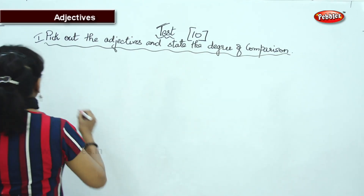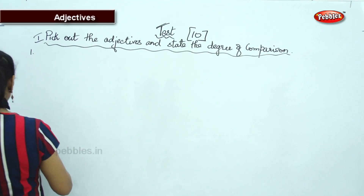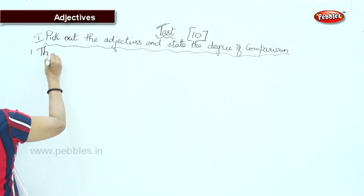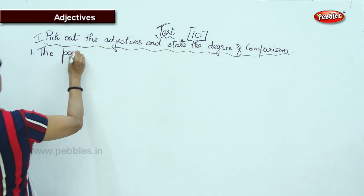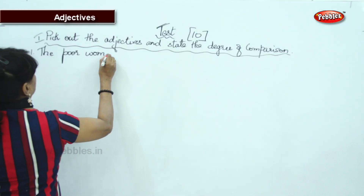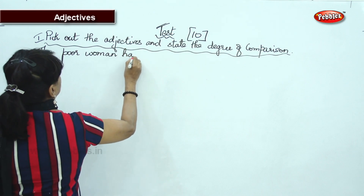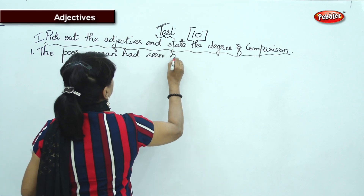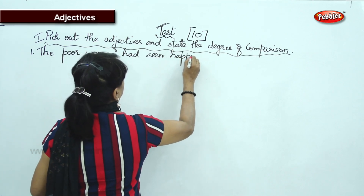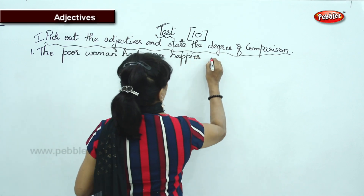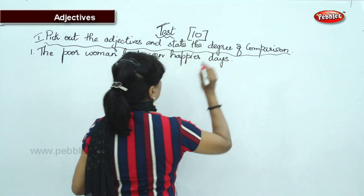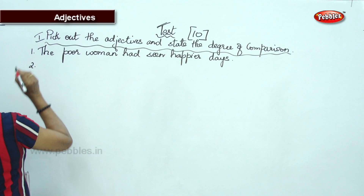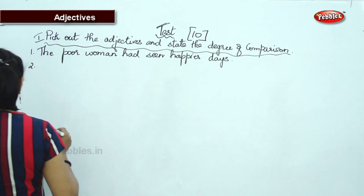Okay, now the first one: 'The poor woman had seen happier days.' Read properly and underline the correct adjective.